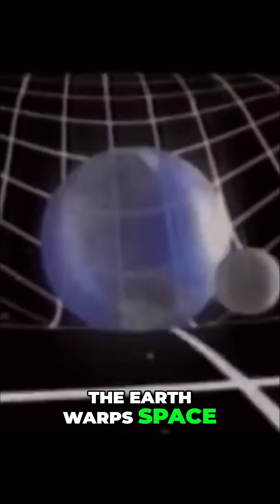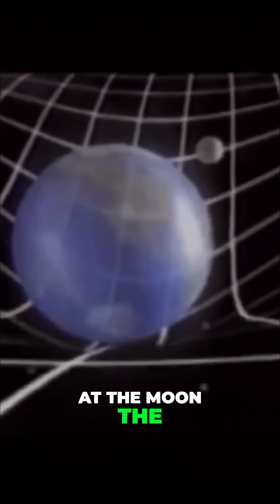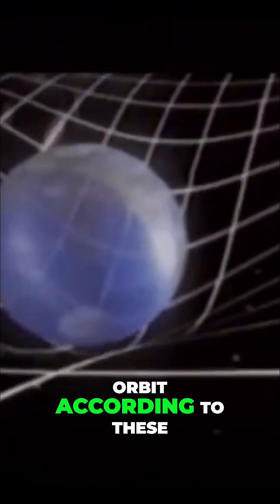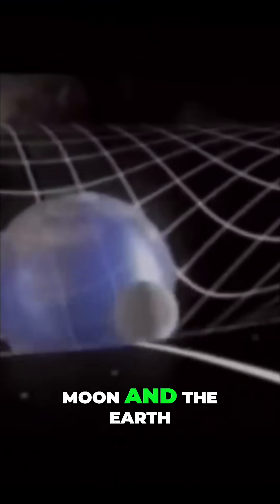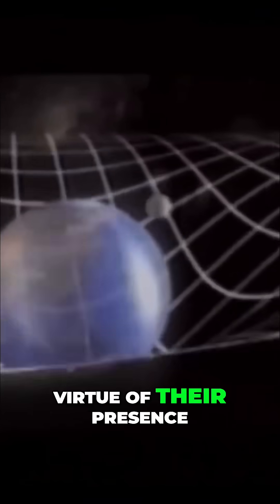Even the Earth warps space around it. Now look at the moon. The moon is kept in orbit according to these ideas because it rolls along a valley in the curved environment that the sun and the moon and the Earth can all create by virtue of their presence.